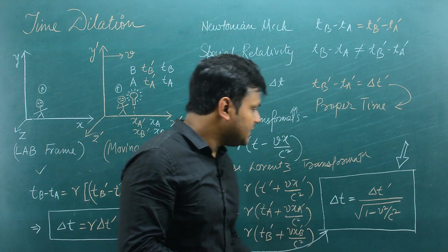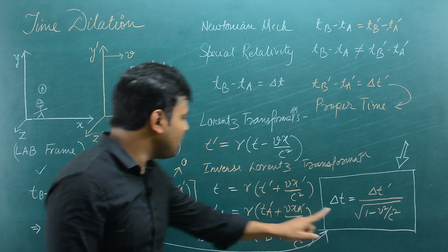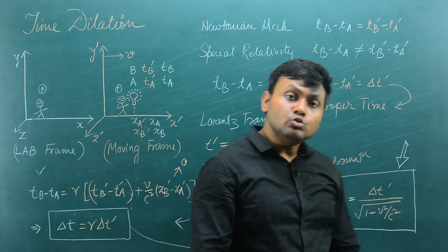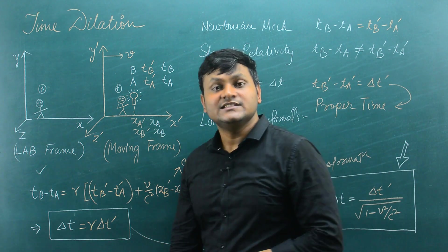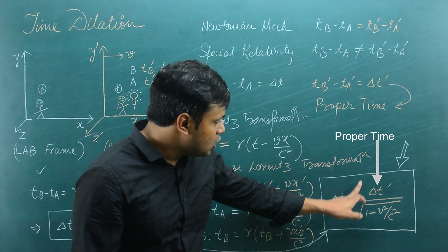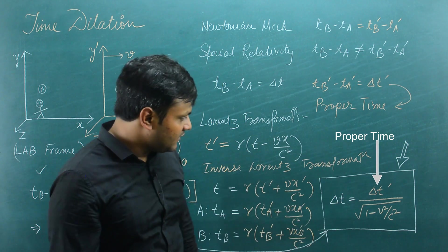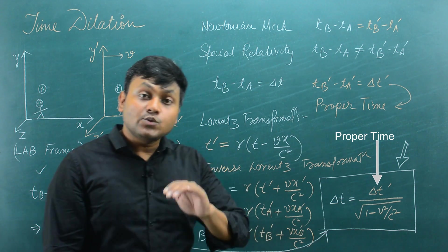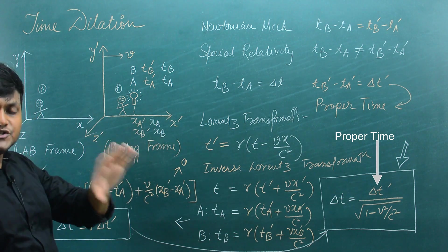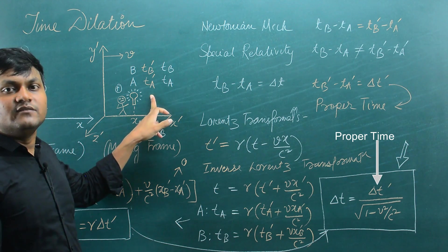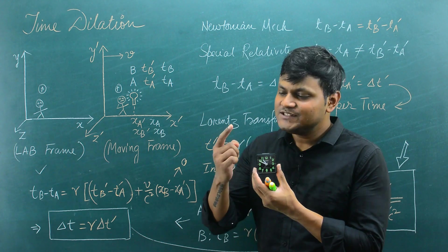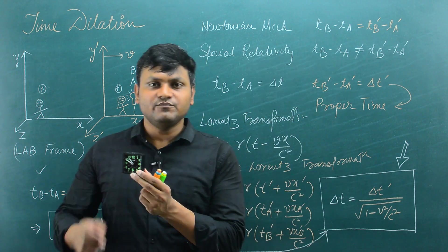The time periods between the same physical events as measured by two different observers are not the same. This is time dilation. Delta T is greater than delta T' because 1 upon root over (1 minus V squared by C squared) is greater than 1 for velocities less than the speed of light. Time periods between physical events appear to be dilated — larger when compared to the proper time interval. So if physical events like a ticking clock are in relative motion with respect to me, my measurements of those ticks will appear dilated.